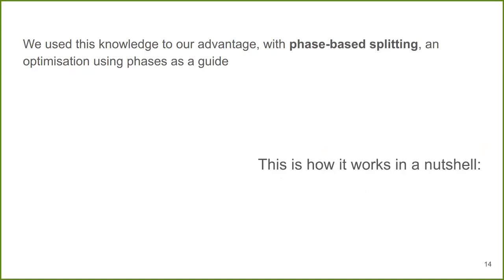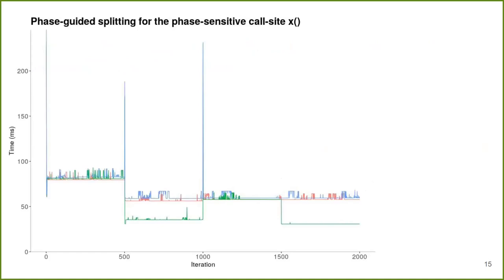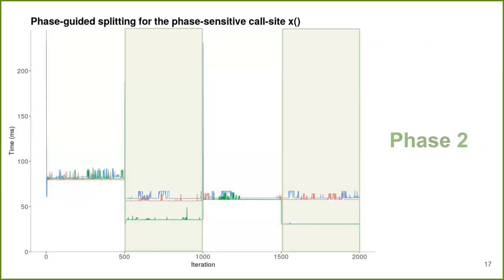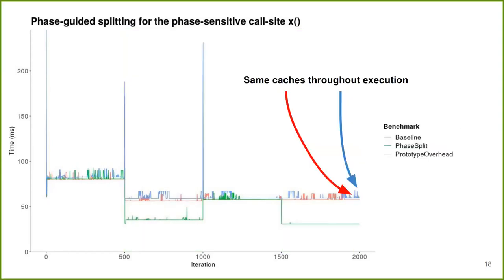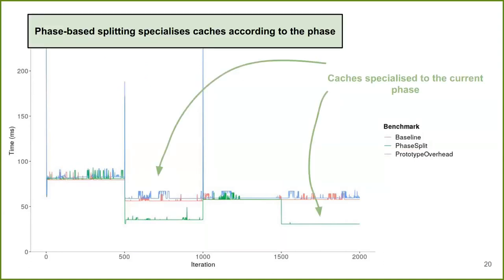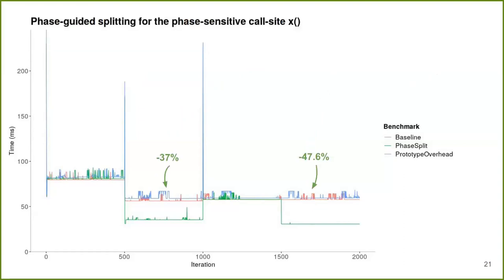So here we have a simple program with two phases. Phase one is splitting once, and phase two is splitting once as well. The blue and red lines represent the same call site context X with the same caches through the whole execution. But during phase two, you can benefit from having a cache with slightly different contents. What we are doing with phase-based splitting is we split on a phase switch, and the result is that the caches will have contents specialized to the current phase. This led to very promising results, around a speedup of around 40% in this microbenchmark.